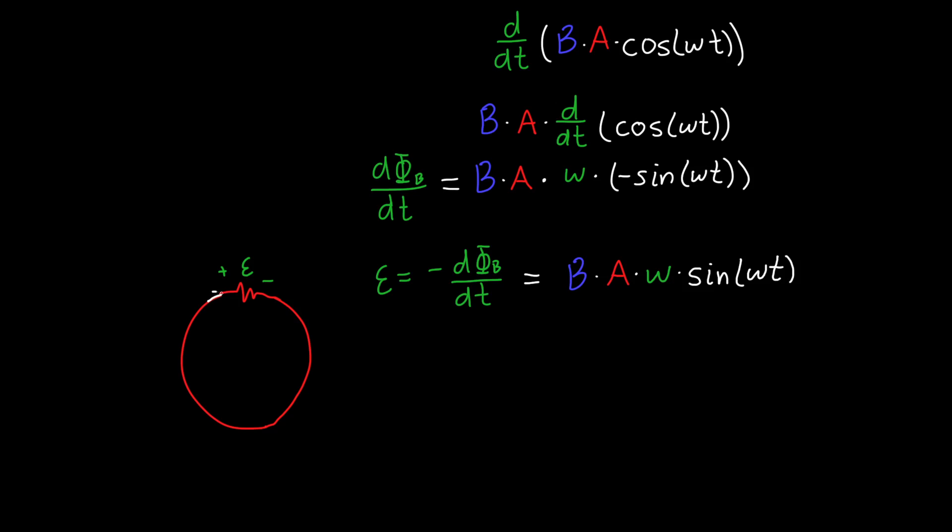B times A times omega times sine of omega t. And all we need to do to find the current I is we just need to divide this whole thing by the resistance. We just need to divide this by R. And then we're done. So this is the answer.